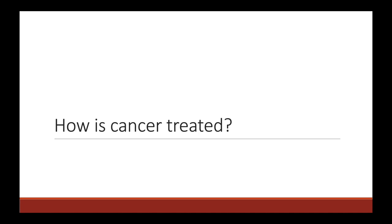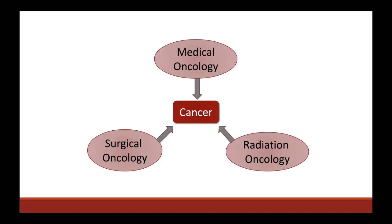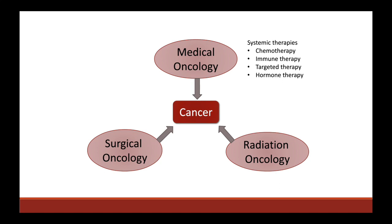Let's talk about how cancer is treated in very general terms. One thing I certainly did not understand as a medical student is how interdisciplinary cancer care actually is. As radiation oncologists, we work very closely with medical oncologists as well as surgical oncologists to come up with an appropriate treatment plan for our patients. Medical oncologists are the folks that prescribe systemic therapies. This includes traditional cytotoxic chemotherapy, as well as immunotherapy agents, targeted therapy agents, and hormonal therapy. These drugs are typically given either orally or intravenously and are distributed throughout the bloodstream, so they have a systemic effect throughout the patient's body.